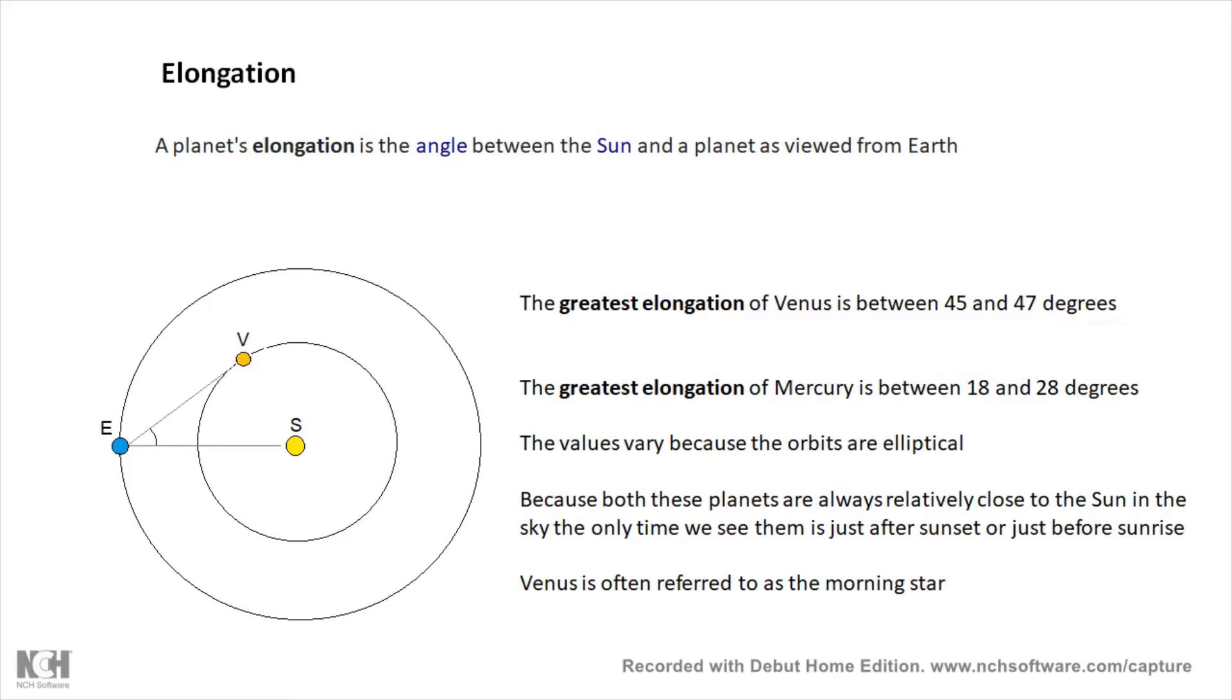Elongation: remember that elongation is an angle, and it's the angle viewed from Earth, the angle that a planet or another object makes with the Sun as viewed from Earth. The term the greatest elongation refers to Venus or Mercury, to inferior planets, and it's the biggest angle that either Venus or Mercury makes with the Sun. The greatest elongation of Venus is about 45 degrees. The greatest elongation of Mercury somewhere between 18 and 28 degrees.